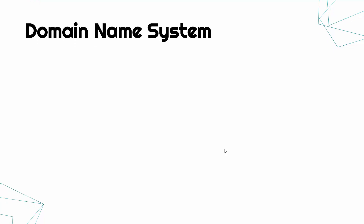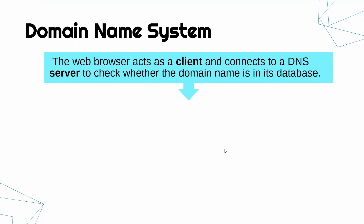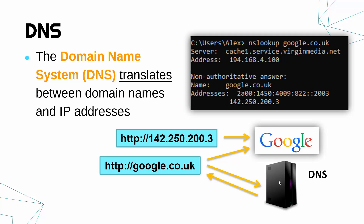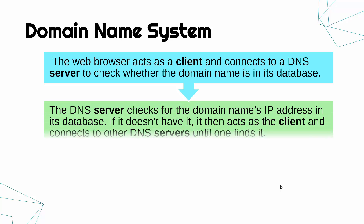This is quite a complicated system behind the scenes, but the structure is something we've covered before — it works in a client-server network. The first step: when you are contacting websites, your web browser is acting as a client — that's Google Chrome, Safari, or whatever it is. That client will connect to a DNS server to check whether the domain name is in its database. That server is just a big database with lots of domains and lots of IP addresses. If the DNS server has it in its database it will send it to the user, but if it doesn't, the DNS server itself will then act as a client and connect to other DNS servers until one finds it.